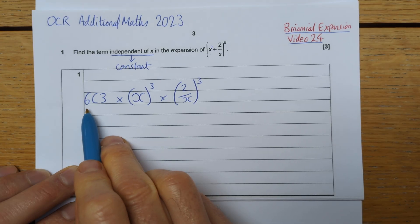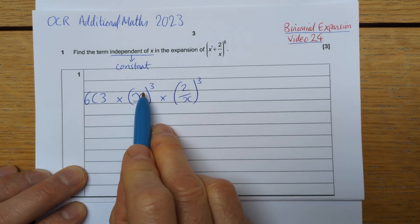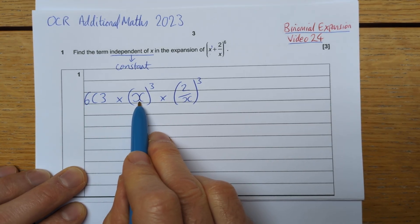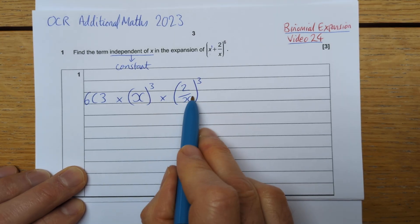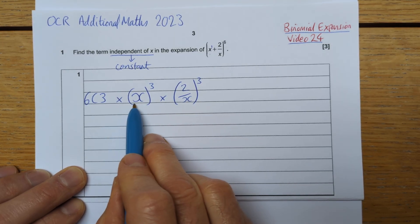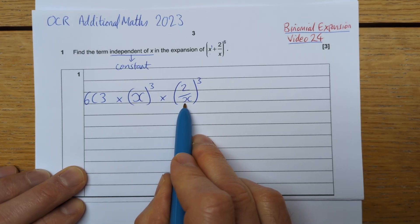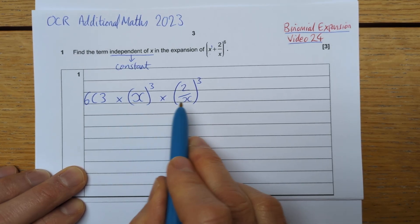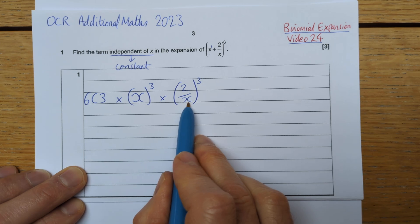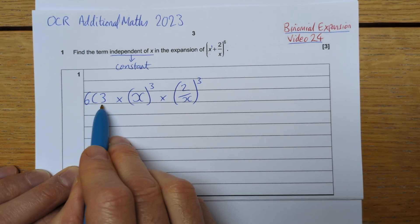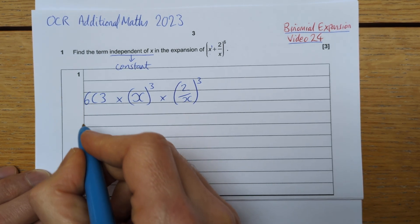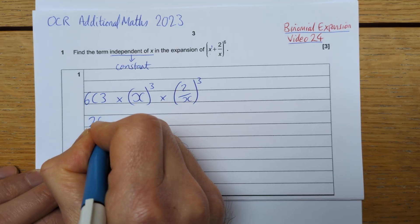Because from the 6 brackets, I want to choose the x 3 times. And I could have chosen that x from the first 3 brackets and then the 2 over x from the next 3 brackets. But I could have also chosen this x from the last 3 brackets and this 2 over x from the first 3 brackets. And then there are various other combinations of ways I could choose these from the 6 brackets. In fact, I can choose them 20 times because 6 choose 3 is 20.